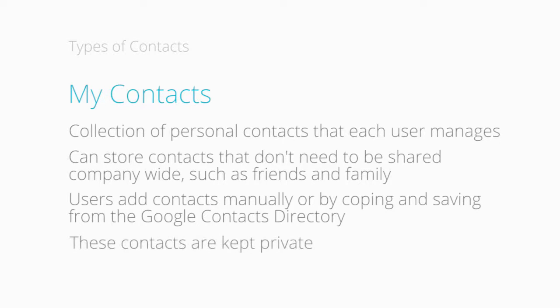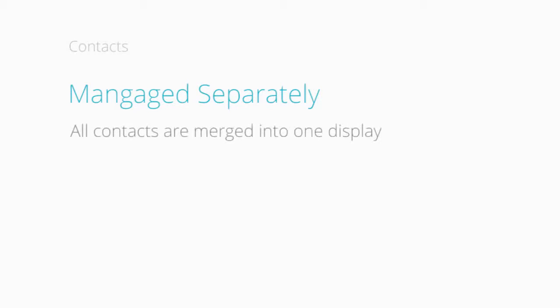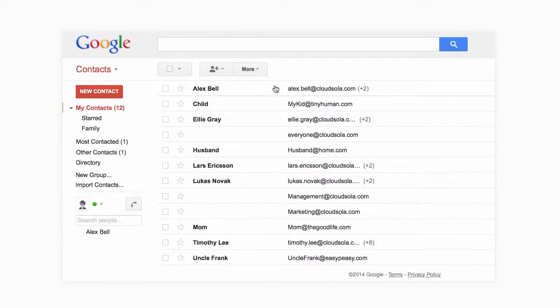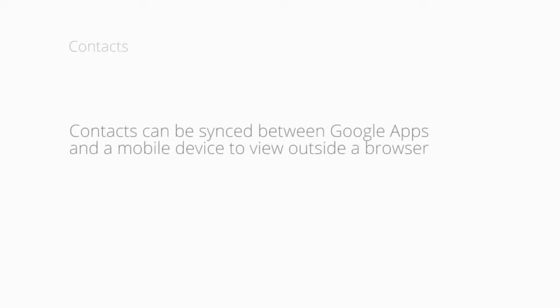The user can add, edit, and delete these contacts and contact groups using the Contact Manager. Although these two types of contacts are managed separately, the information is merged in the display. Users see a single profile for each contact entry when viewing information in the Contact Manager or on a mobile device. Users can also synchronize contacts between Google Apps and a mobile device to see contacts outside of the browser.